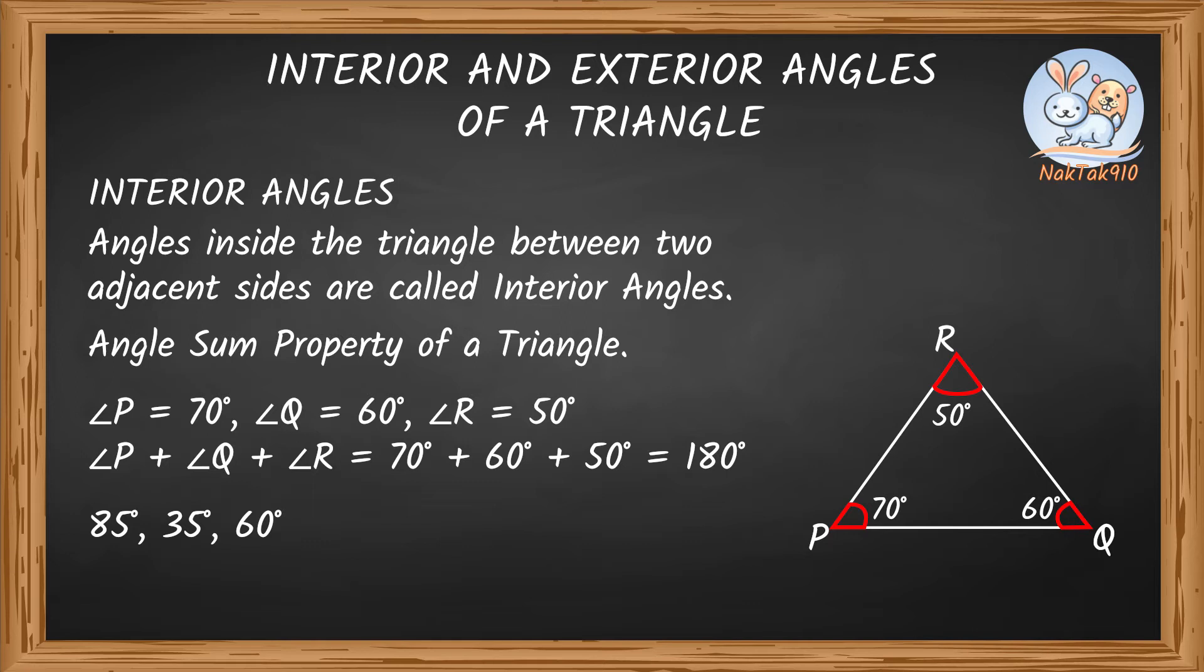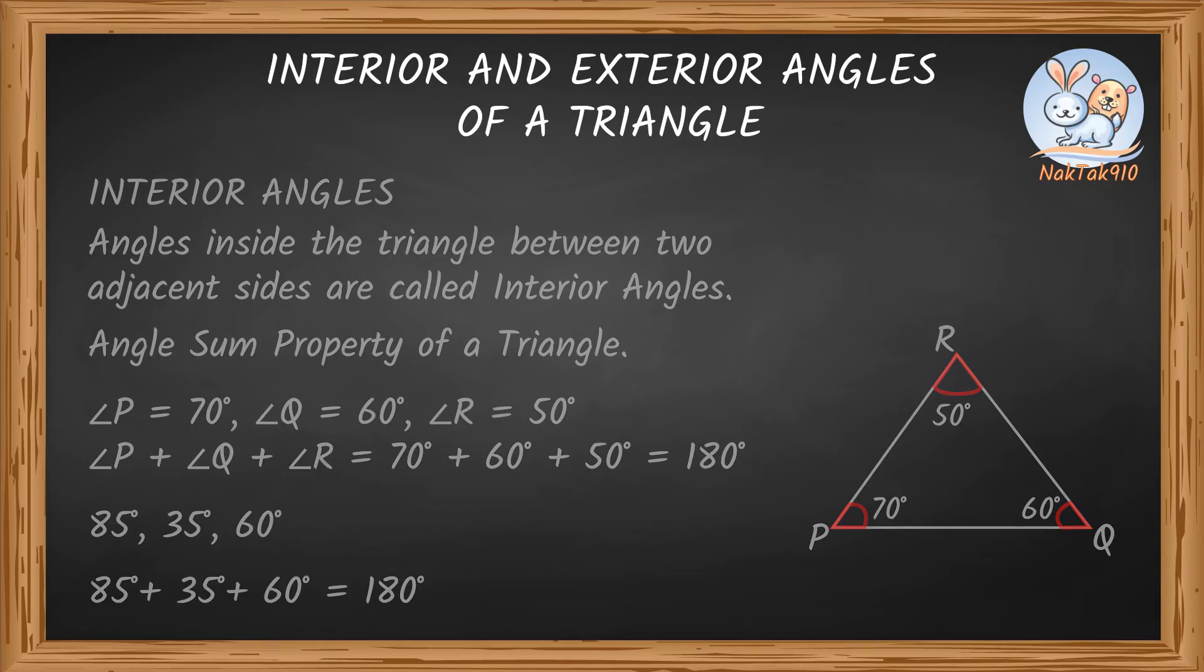85 degrees plus 35 degrees plus 60 degrees equals 180 degrees. Since these three angles add up to 180 degrees, they form a triangle.